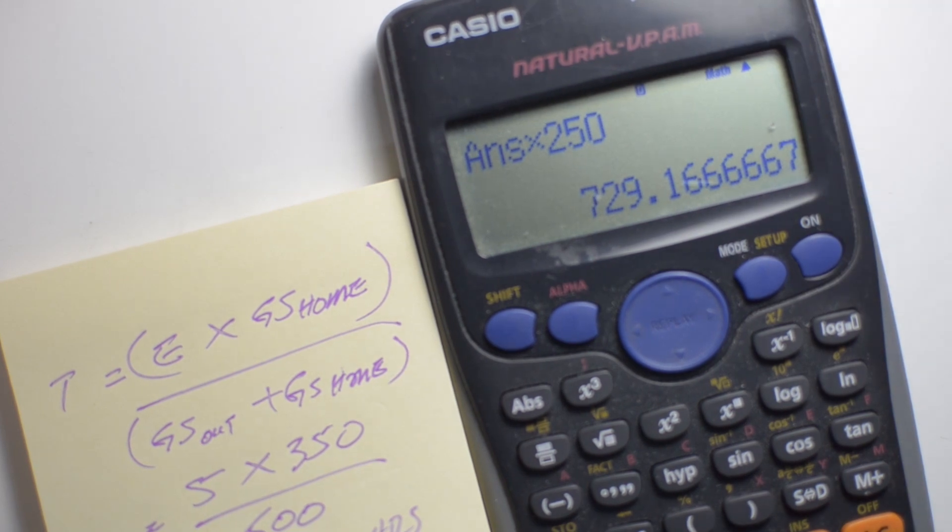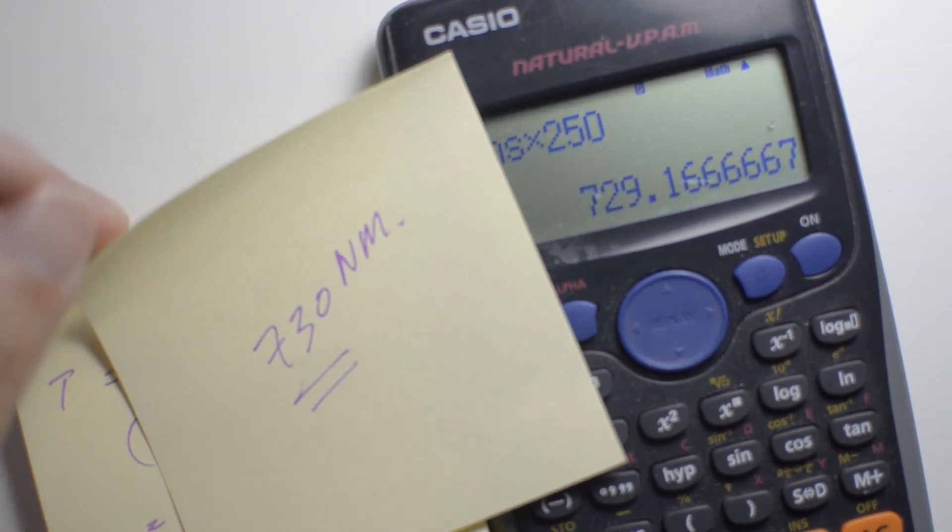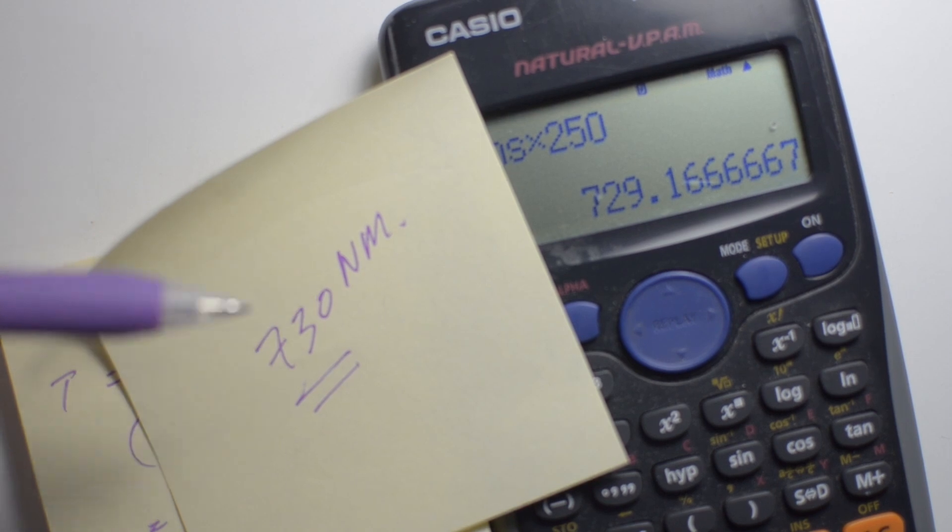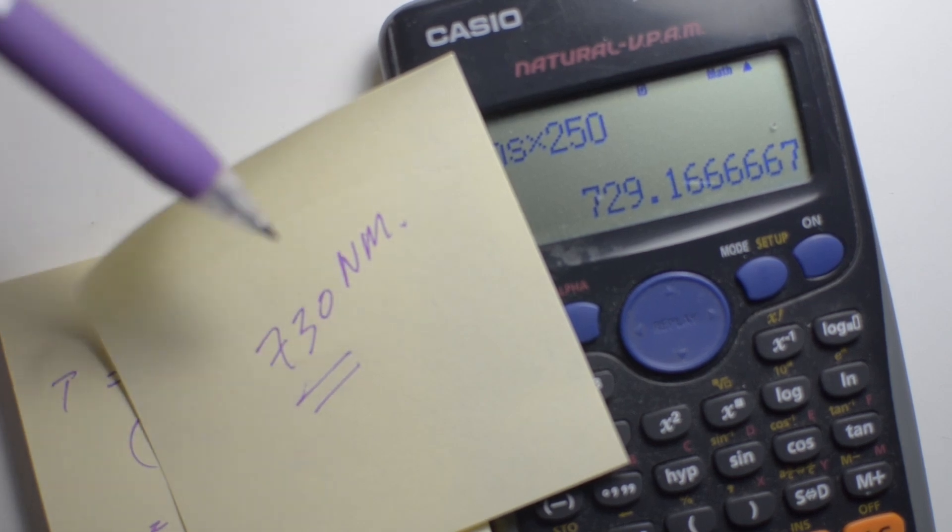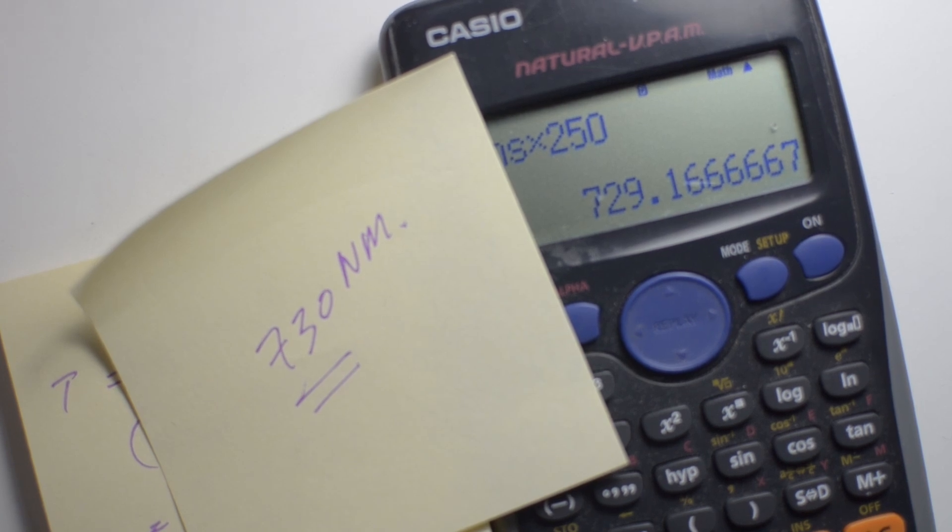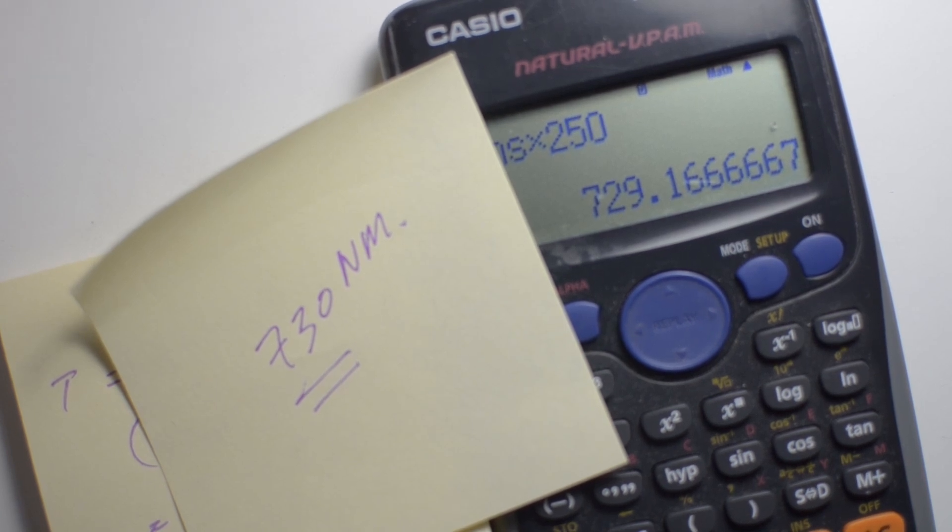And let us compare that against the answer that we got when using the CRP5, 730 miles. We're just a couple of decimal places off in determining how far the point of safe return is from our origin or our departure aerodrome. And that's all there is to it.